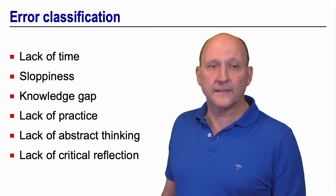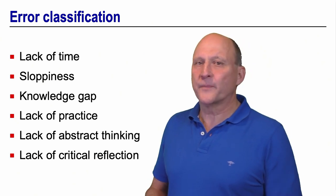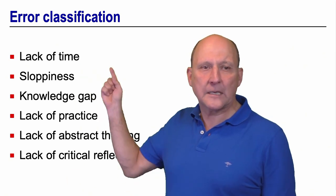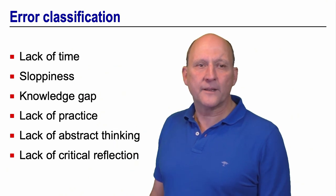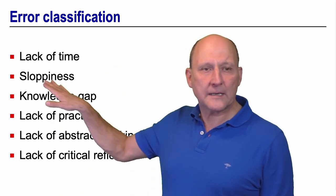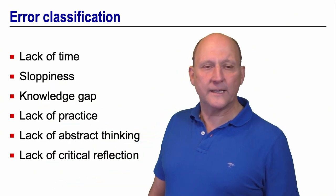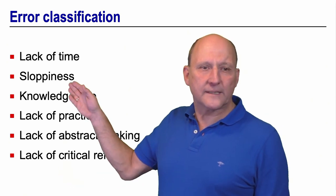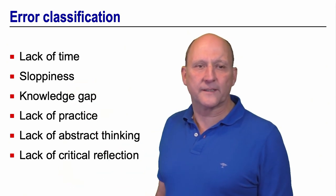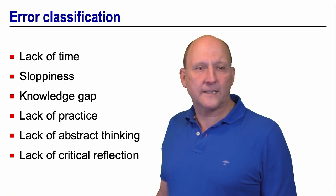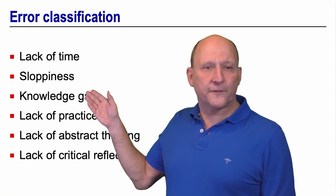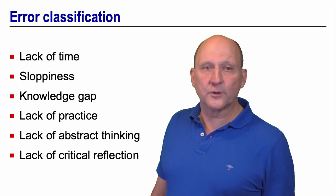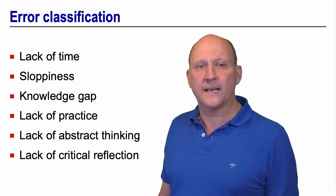After the exam, we analyzed the mistakes we observed and we classified them into the classes you see on this slide. The first class is a lack of time that led to the errors made, and the other classes are ordered with increasing level of cognition. So we have on the lowest level sloppiness made by the students, which are not dramatic. Then we observe mistakes due to knowledge gaps, mistakes due to a lack of practice, mistakes due to a lack of abstract thinking and a lack of critical reflection.